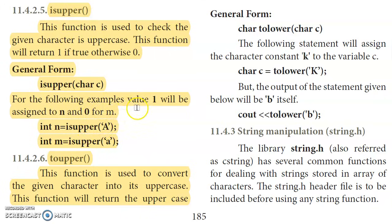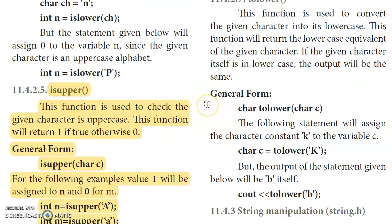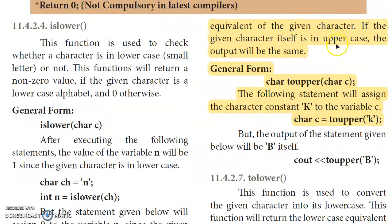The toUpper function is used to convert the given character into its uppercase equivalent. If the character is already in uppercase, the output is the same. For example, toupper of small 'k' returns capital 'K', stored in the variable c. The general form is: toupper(c).